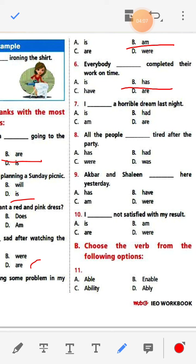Number seven: I dash a horrible dream last night. With 'I' we use 'am' — I am a horrible dream last night. Number eight: All the people dash tired after the party. Because so many people are referred to, the answer is 'were' — All the people were tired after the party.